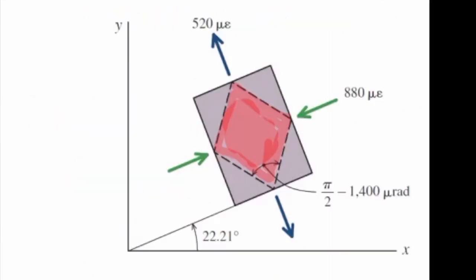Here is the rotated element at which we expect the principal strains. So I need to rotate this element by the angle of 22.21. Strain in the n direction would be 880 negative. Strain in the y direction would be 520 positive.